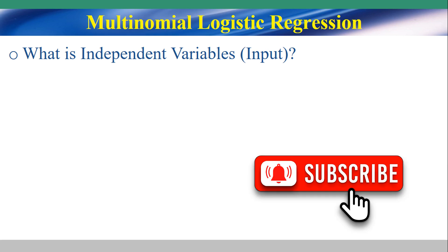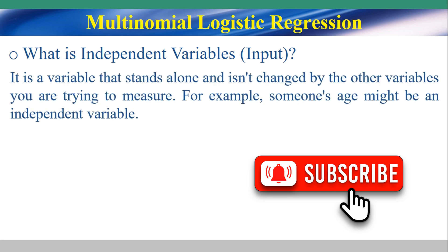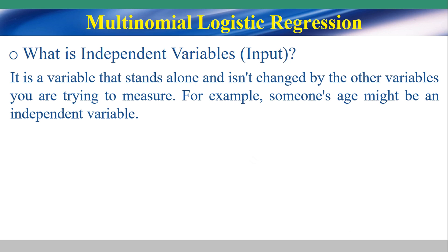Let me show you what is the independent variable, or input. It is a variable that stands alone and is not changed by the other variables you are trying to measure. For example, a person's age might be an independent variable.